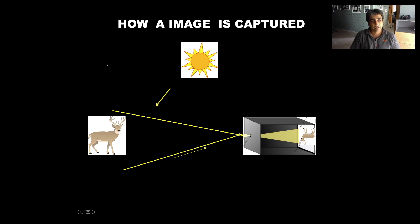When we talk about capturing light, what we mean is capturing reflected light. So when we take an image of this deer, what we are seeing is the light falling on the deer that is getting reflected off the deer and onto the camera on the image sensor.